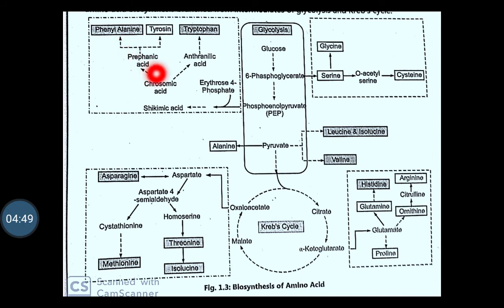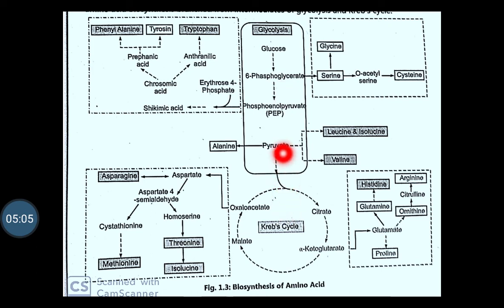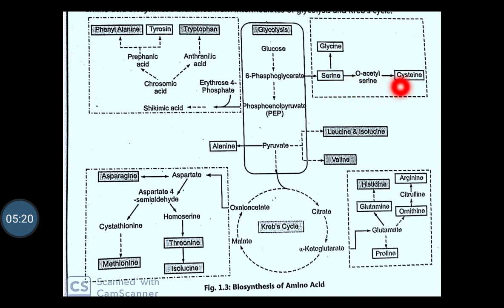You can see that the central glycolysis and the Krebs cycle or the TCA cycle are the central pathways. The components which are formed during the process of glycolysis and the Krebs cycle act as a precursor for biosynthesis of the amino acid. For example, from 3-phosphoglycerate, the biosynthesis of serine and glycine takes place; from serine, the biosynthesis of cysteine takes place. Then the pyruvate, which is the end product of glycolysis, acts as a precursor for the biosynthesis of leucine, isoleucine and valine.